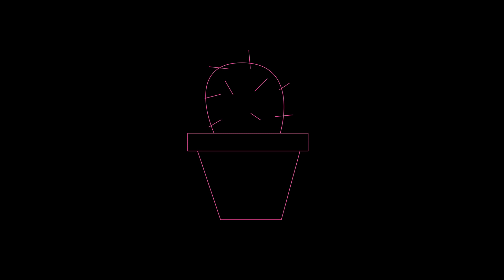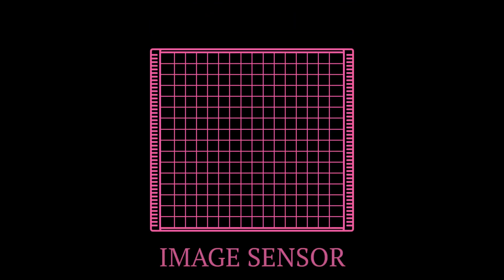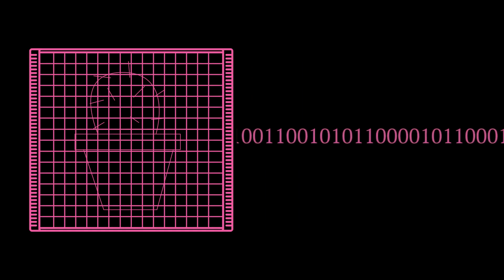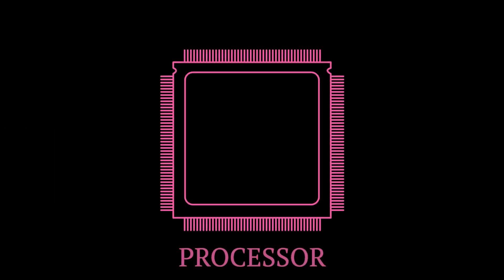A picture first has to be captured. To accomplish this, there exists a device known as an image sensor. This device captures light and essentially stores bits representing colors in an XY coordinate. These bits are then read by a different chip known as a processor and stored into memory.